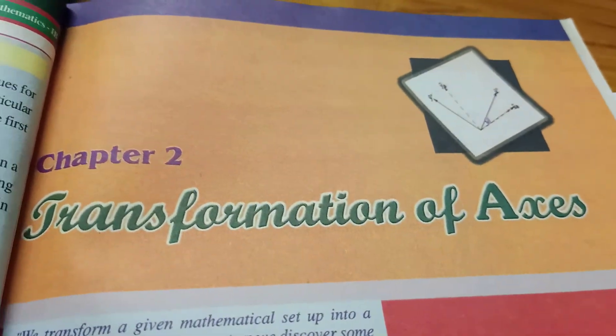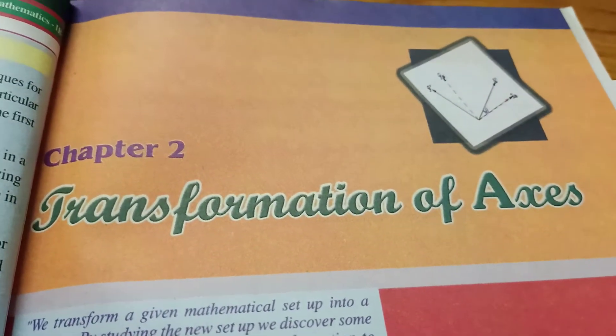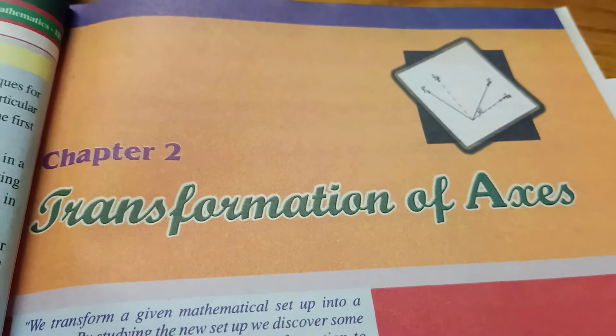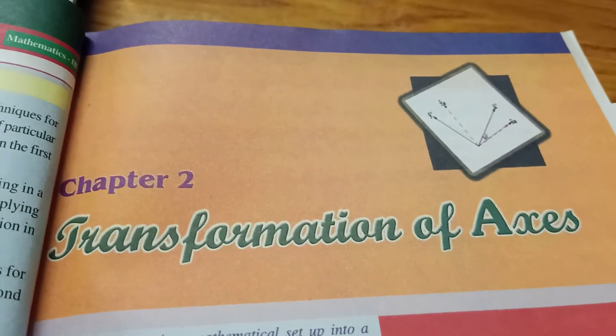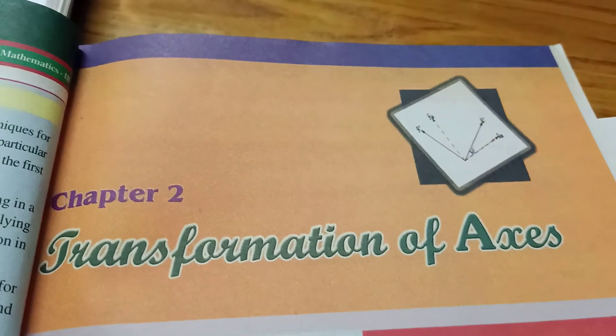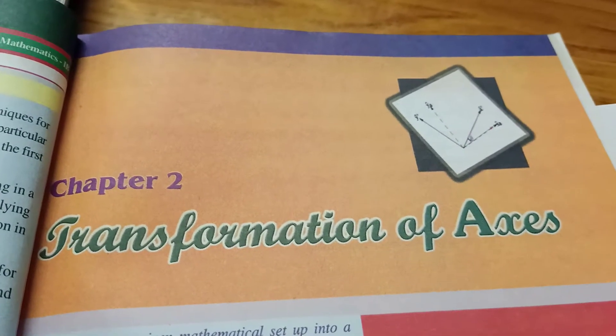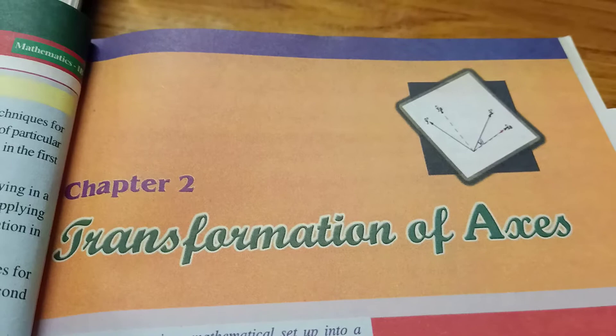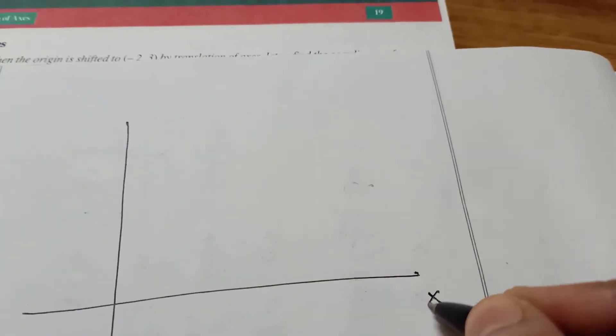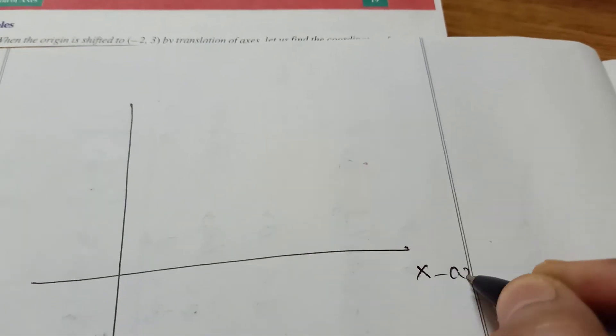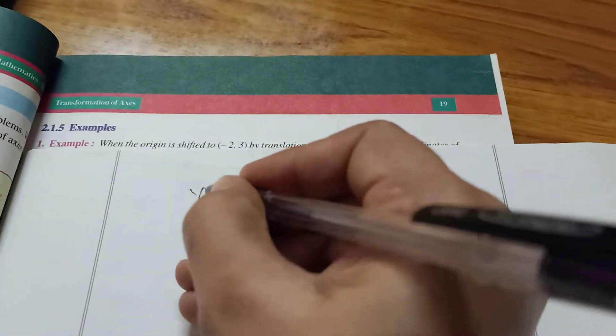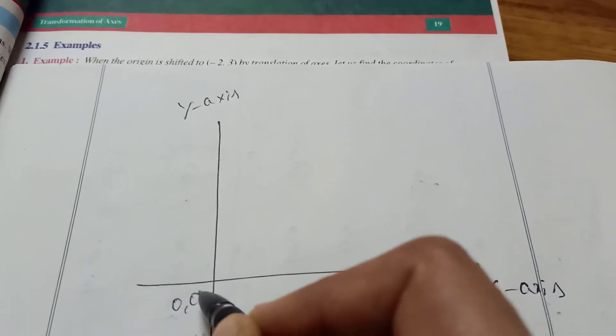Hi students, today I am explaining transformation of axes. This is the first topic, a very important chapter. After locus, the second chapter is transformation of axes. Here we have the x-axis and y-axis, with origin at 0 comma 0.